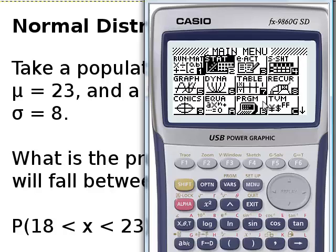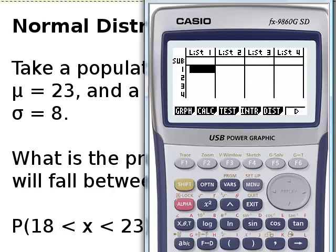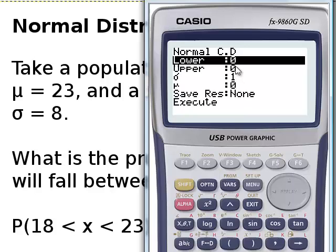In the stats menu we are looking for a distribution, and it's the normal distribution. We want the normal cumulative because it's for a range. So that leaves us with four parameters we have to fill in.